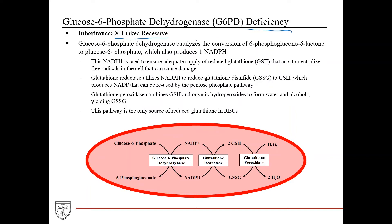Glucose 6-phosphate dehydrogenase catalyzes the formation of 6-phosphogluconolactone from glucose 6-phosphate, which most importantly produces NADPH. This NADPH is used to ensure an adequate supply of reduced glutathione (GSH), which acts to neutralize free radicals in the cell. Hydrogen peroxide, for example, can be broken down into hydroxyl radicals that cause significant damage — so this is an important protective mechanism, especially in red blood cells.